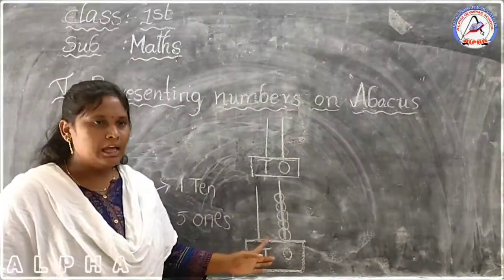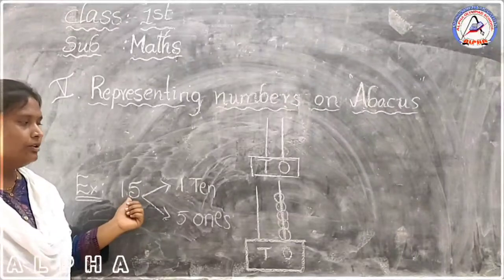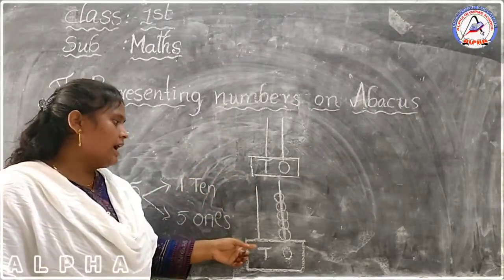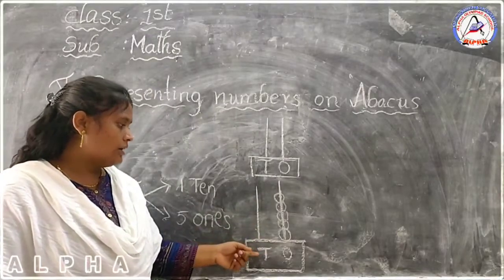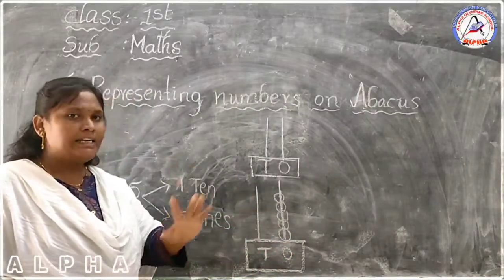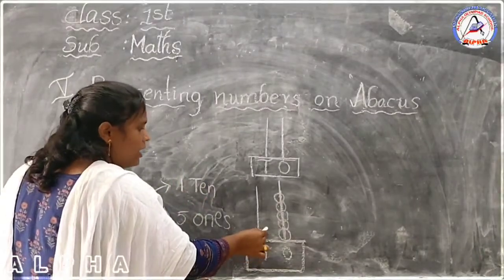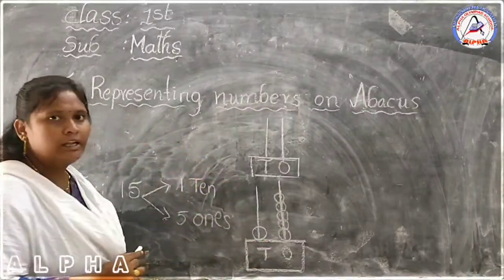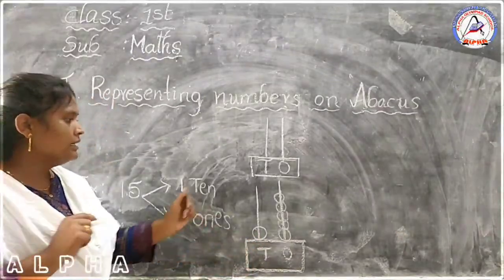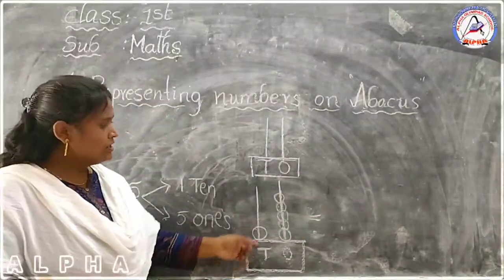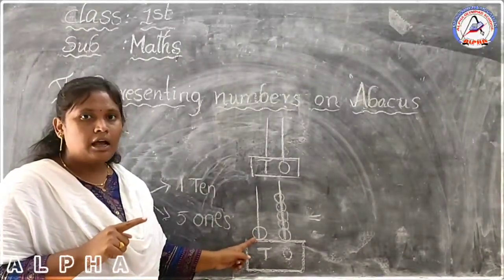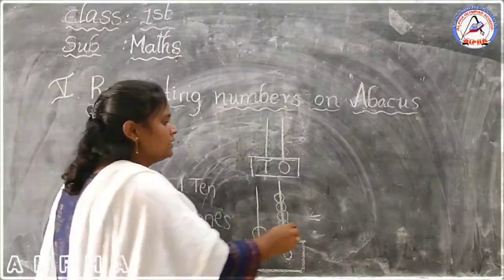So here you have five ones — it means five, number five. Let's see the tens place. Let's come to the tens place. In fifteen, you have only one ten — it means one tenth. Now let's represent the number ten on the Abacus. In the Abacus, we have two rods: the ones rod and the tens rod. In the tens rod, we have to represent the one ten. Here, you have to represent the one ten, so I am giving one bubble only. It means here you have one ten.